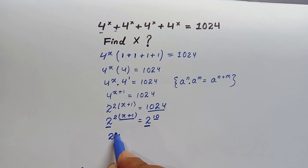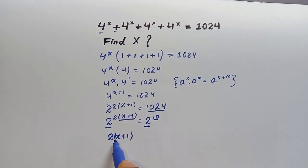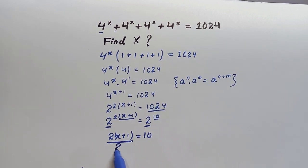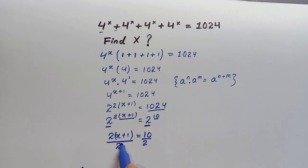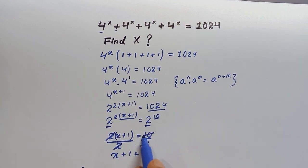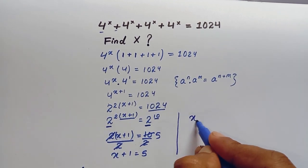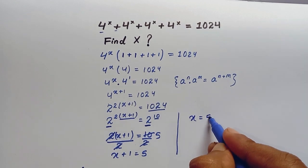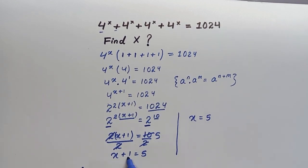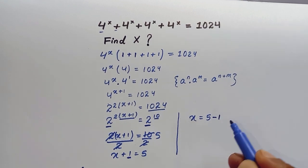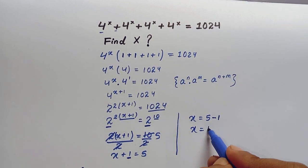So 2 times x plus 1 equals 10. When we divide both sides by 2, we cancel the 2, giving x plus 1 equals 5. Taking 1 to the right-hand side, this becomes minus 1, so x equals 4.